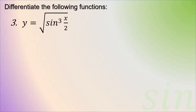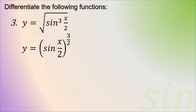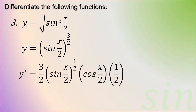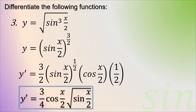Third example: y is equal to the square root of sine cubed of x over 2. First, we remove the square root and rewrite it as sine of x over 2 raised to the exponent 3 halves. Then deriving using the power rule, that is 3 halves times sine of x over 2 raised to 1 half, times the differential of sine of x over 2, which is cosine of x over 2, times the differential of u which is 1 half. Simplifying, that is 3 fourths cosine of x over 2 times the square root of sine of x over 2.